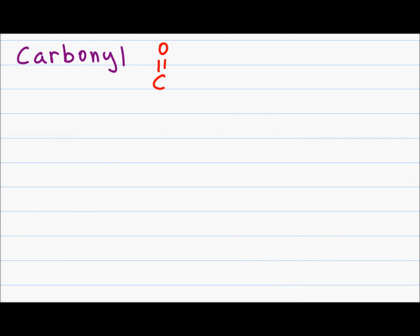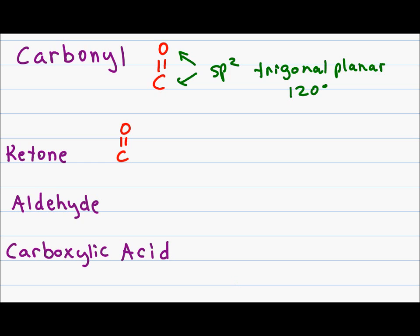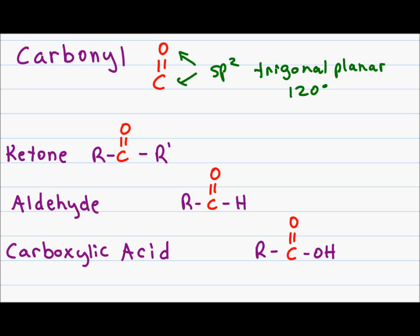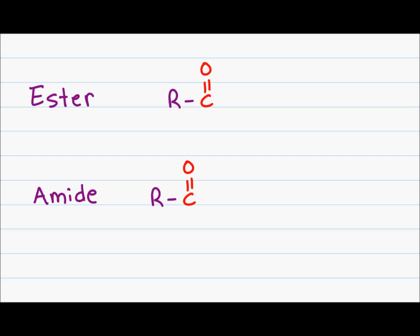Our next set of functional groups are all related by the carbonyl group, which is a carbon double-bonded to an oxygen. Notice that the carbon and oxygen share a pi bond, so they are sp2 hybridized, trigonal planar, and have a bond angle of 120 degrees. A ketone is defined as a carbonyl group between two R groups — these can be the same or different R groups. An aldehyde is characterized by a carbonyl group at the end of the molecule, so we have an R attached to the carbonyl on one side and a hydrogen on the other side. And finally, the carboxylic acid is characterized as a terminal functional group that has a carbonyl with an OH attached to it.